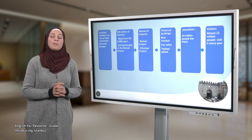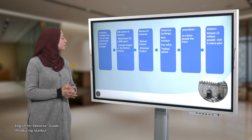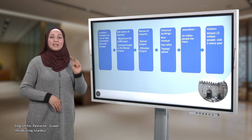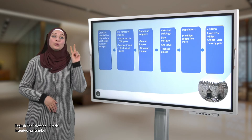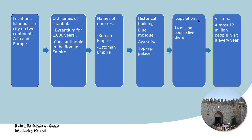Let's start talking about Istanbul's location. Istanbul is a city on two continents: Asia and Europe. Regarding the old names of Istanbul, we said Istanbul has two old names. The first one is Byzantium — it was called Byzantium for 1,000 years. The second one is Constantinople, used during the Roman Empire.